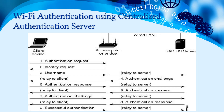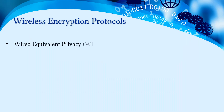The access point responds back to the client device, the client challenges the authentication again, and the challenge is sent back to the RADIUS server. The RADIUS server responds with the authentication response, and after successful authentication, the success message is sent. The client device then gets connected to the network and can start transferring data packets.